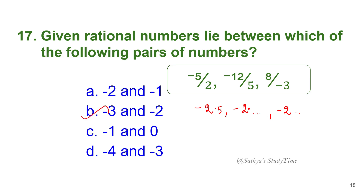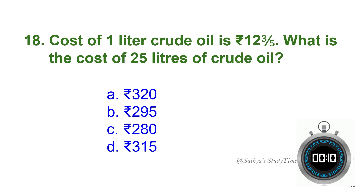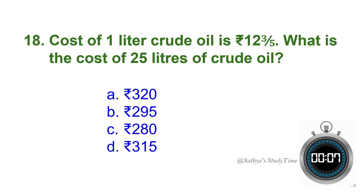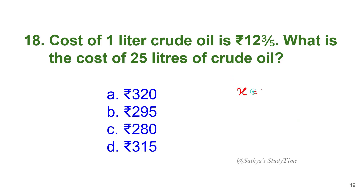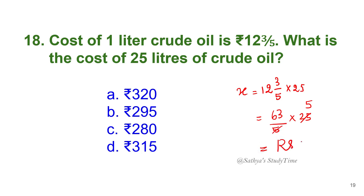Eighteenth question: Cost of 1 litre of crude oil is rupees 12 and 3/5. What is the cost of 25 litres of crude oil? Convert the mixed fraction: 63/5 × 25 = rupees 315. The answer is option D.